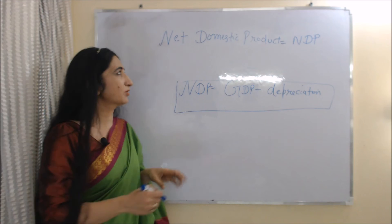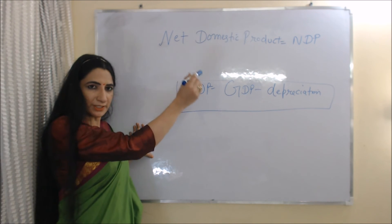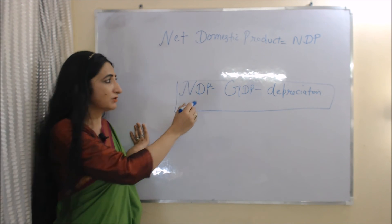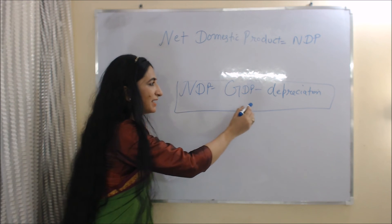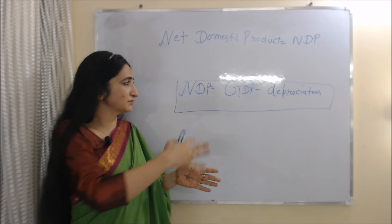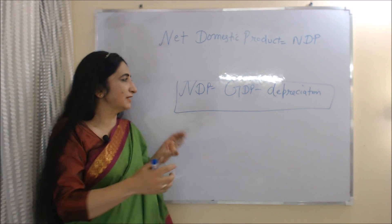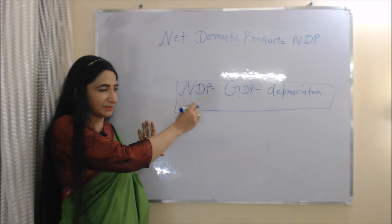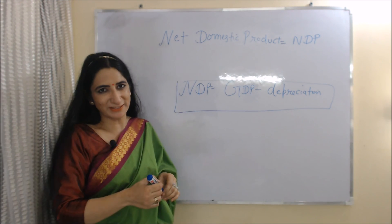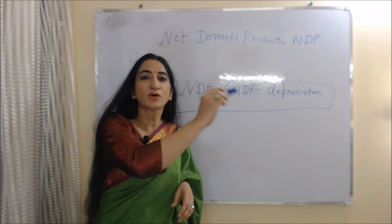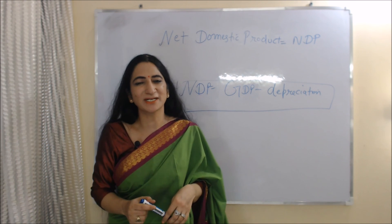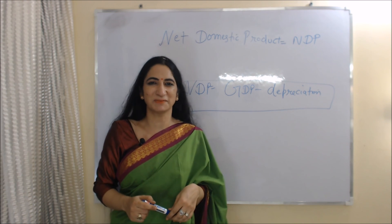Lastly, we will talk about net domestic product, or NDP. NDP = GDP − Depreciation. When we subtract depreciation from GDP we get the value of NDP. This is all about some concepts of national income. I think you got it, and thank you so much for watching this video.